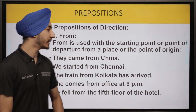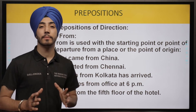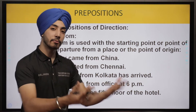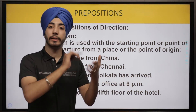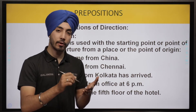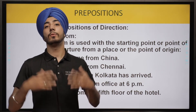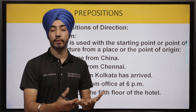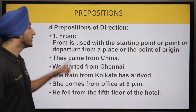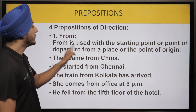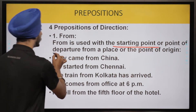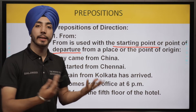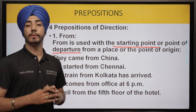So, prepositions of direction. The first preposition we are going to study today is 'from.' From means where something is coming from — where it is coming from, what is the starting point. Like when we write someone's greeting card and write 'from' our name, we want to convey where that parcel or gift originated. So 'from' is used with the starting point, the point of departure, or the point of origin.